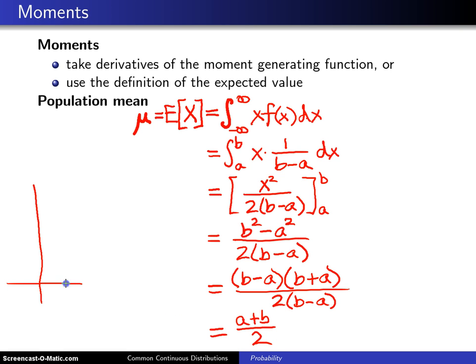And that should come as no surprise because if you look at the probability density function of the uniform a, b distribution, it is a symmetric probability density function around the midpoint of a and b. And that midpoint, of course, is just going to be the average a plus b divided by 2. So that takes care of the first moment. On the next slide, we're going to move on to the second, third, and fourth moments.